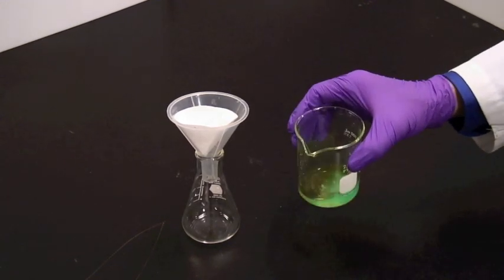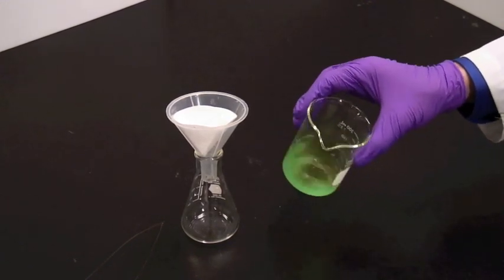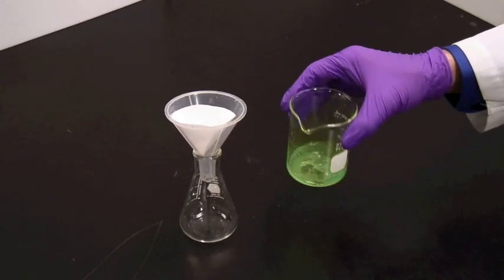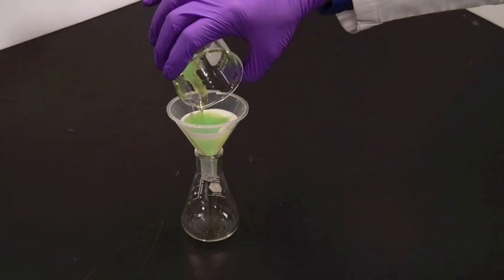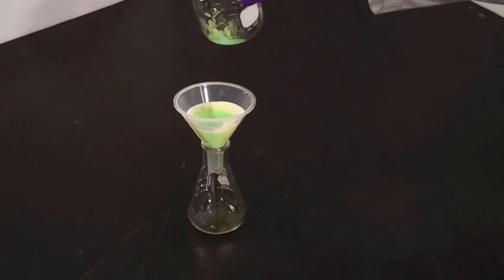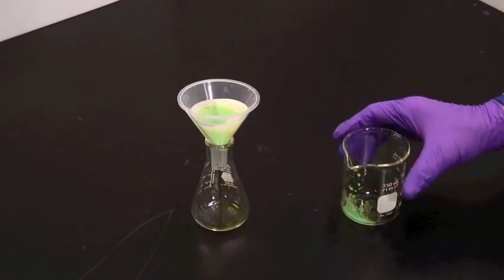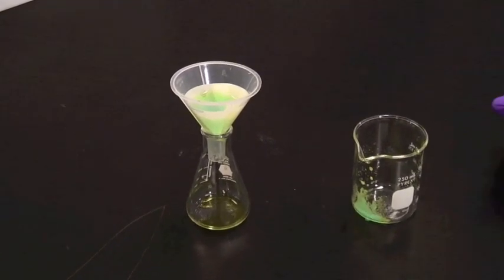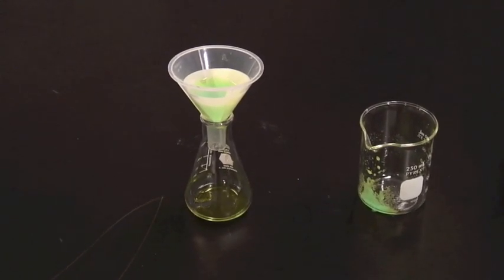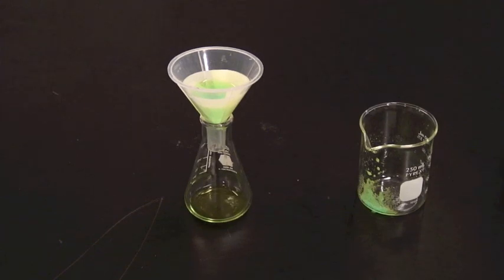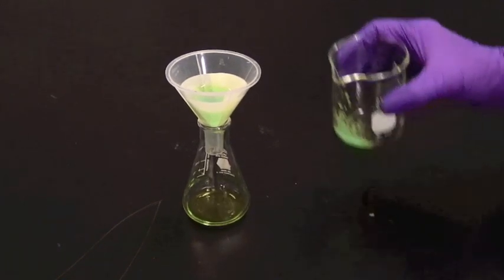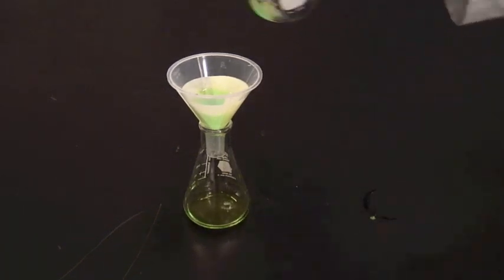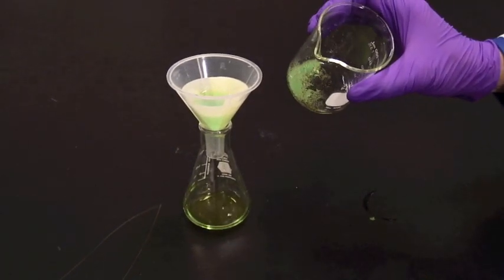Take your mixture of solid and liquid and swirl it to suspend the solid in the liquid and pour. Be careful when you're pouring that you don't overtop the liquid as it goes through. Otherwise, it'll just run down the outside of the filter paper, and it won't be much use.